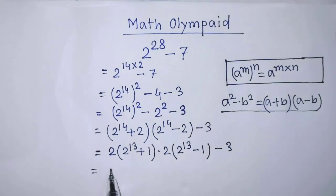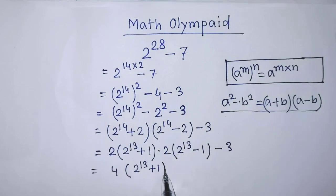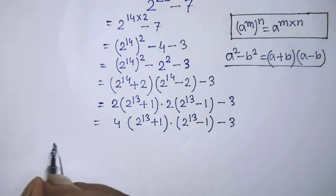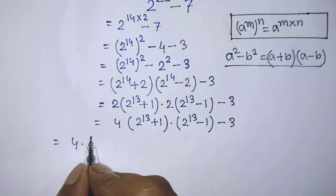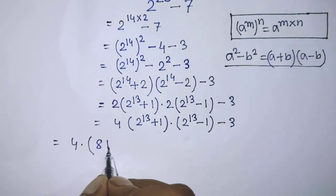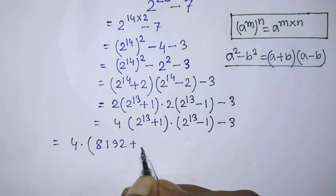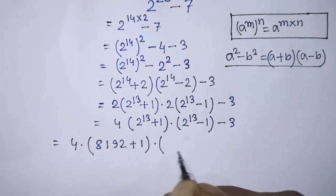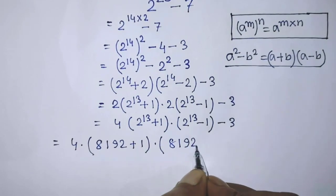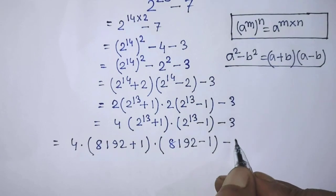So it will be 4 times 2 to the power 13 plus 1, times 2 to the power 13 minus 1, minus 3. So it will be 4 times 2 to the power 13 — that is 8192 — plus 1, times 8192 minus 1, minus 3.